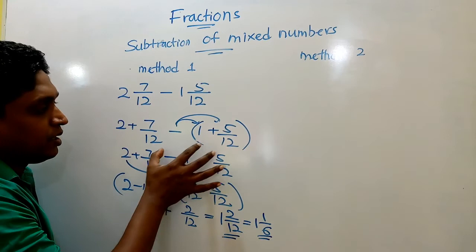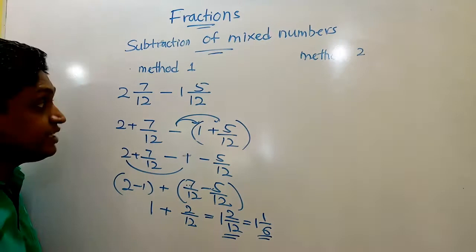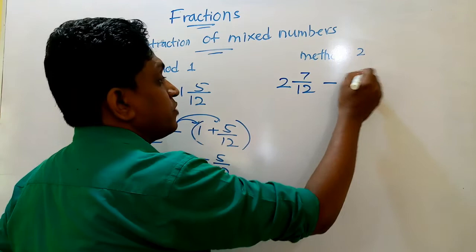But here, here you can see, if you did not use this bracket, you cannot show these as subtraction. Therefore, the first method is somewhat difficult with subtraction. Therefore, better to use the second method as addition. And here the second method, children, 2 and 7 over 12 and 1 and 5 over 12 is easier.